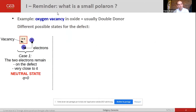Let us take as an example the oxygen vacancy in an oxide, which is usually a double donor defect, which means that this defect has the capacity to liberate two electrons. So the defect can be in different charge states.